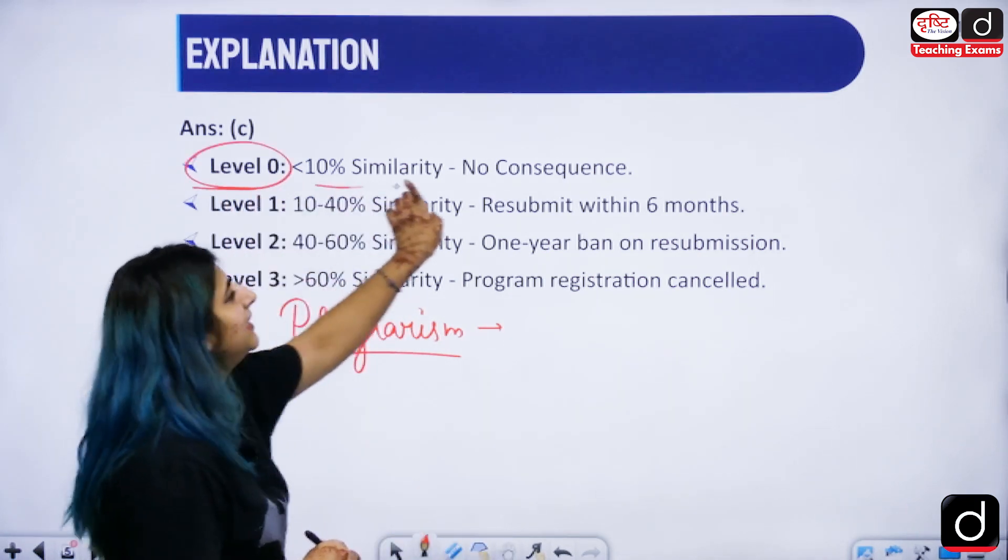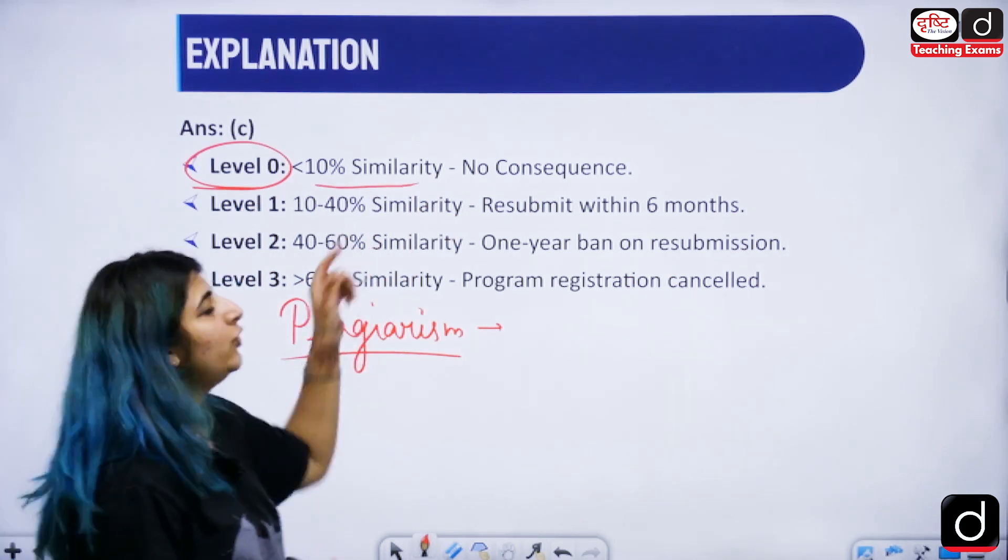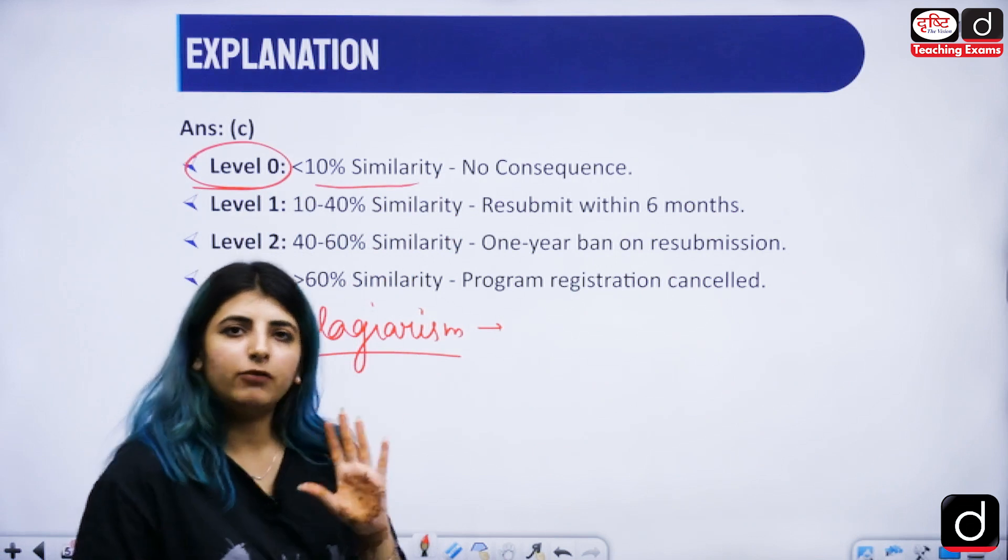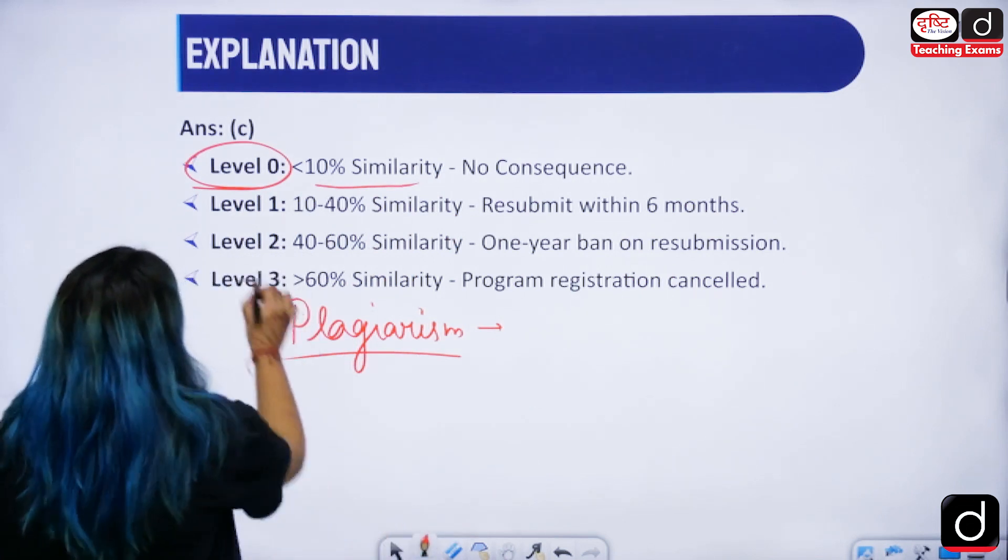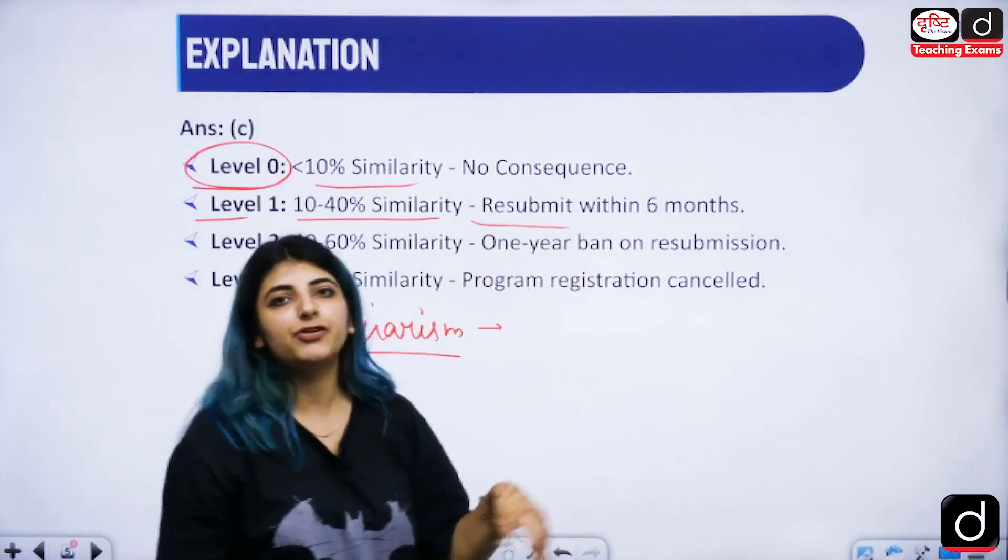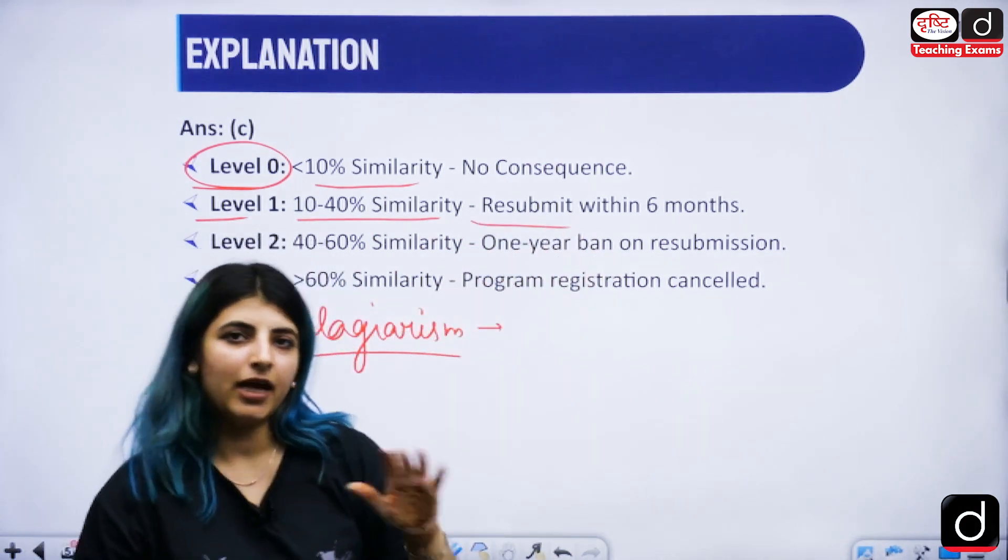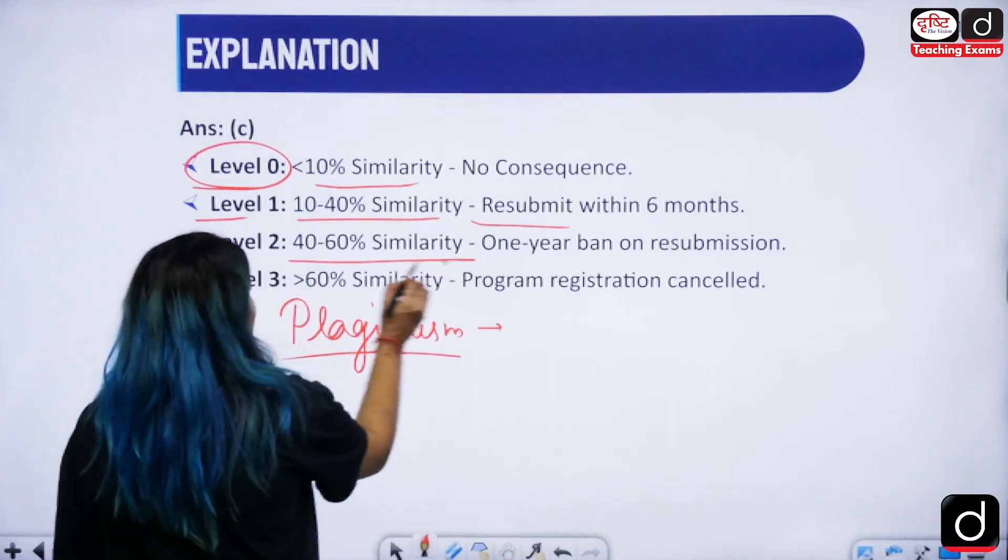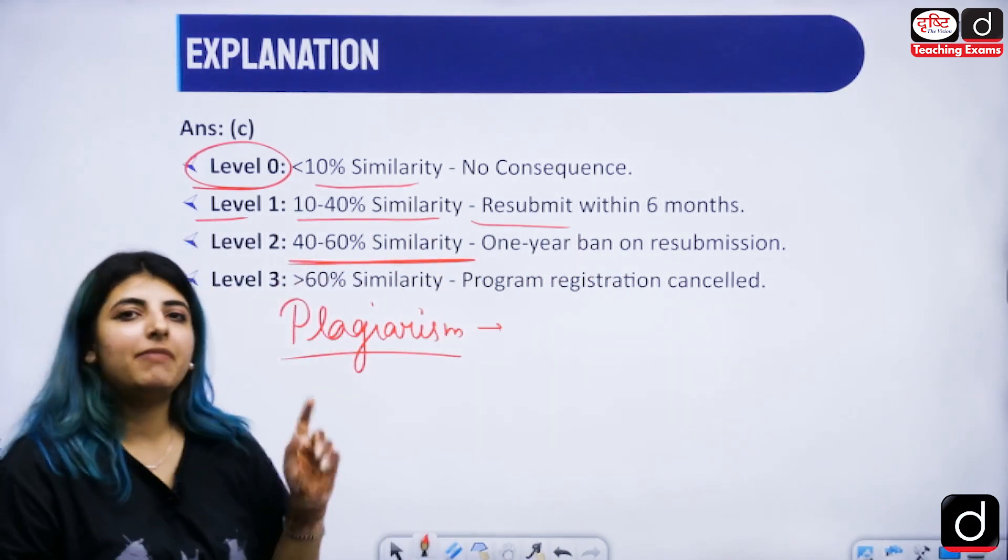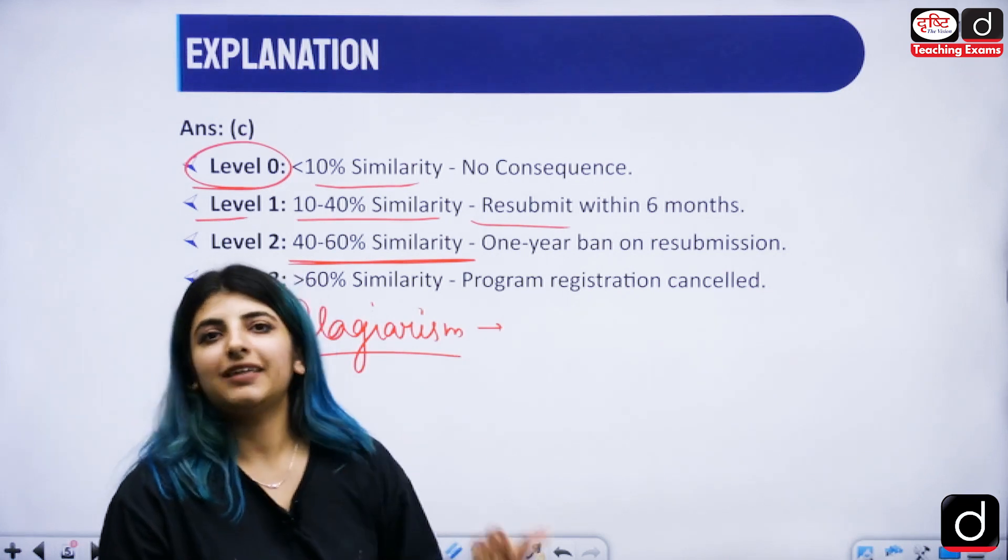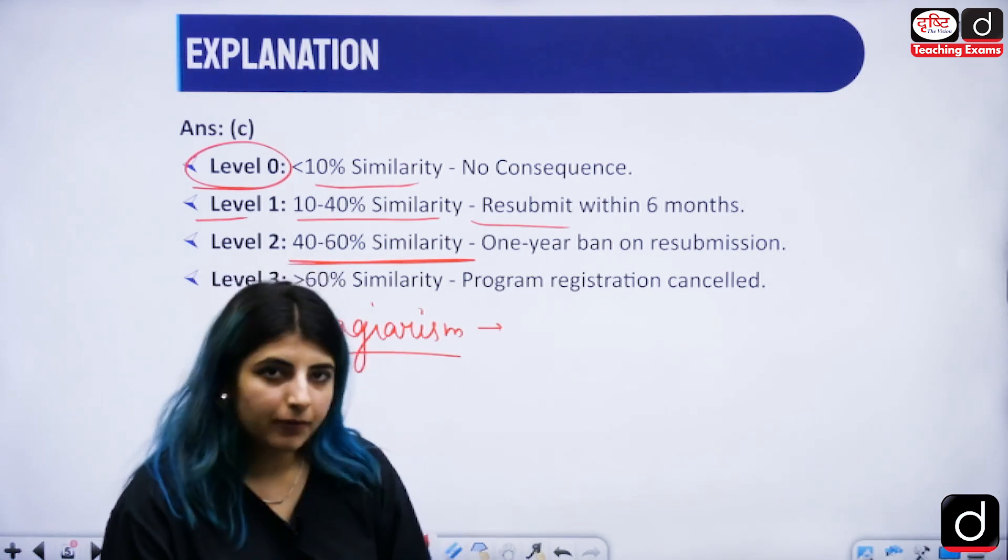So level 0 means less than 10% similarity, no consequence, that is acceptable. Level 1: 10 to 40% similarity, you will have to resubmit your paper, thesis, dissertation within the next 6 months. 40 to 60% similarity, one year ban on resubmission.